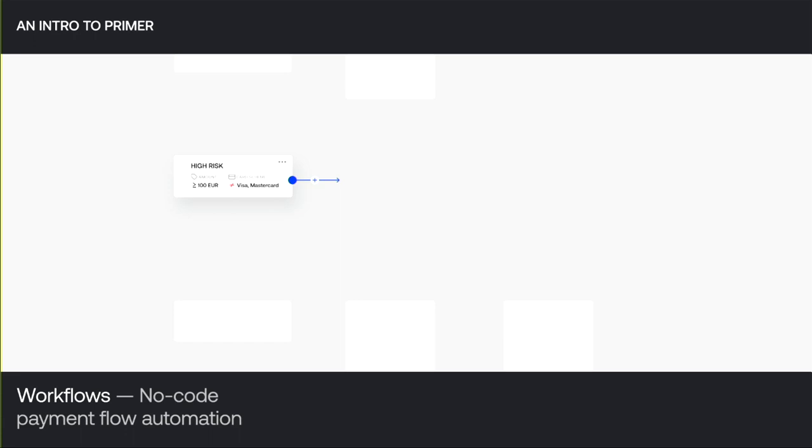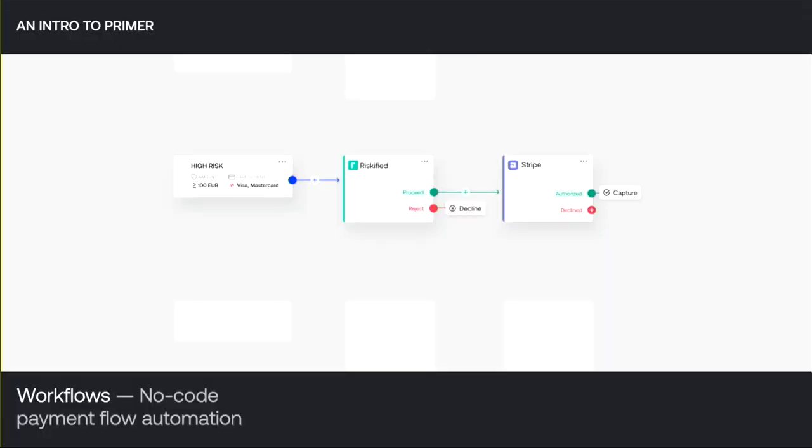Let's say we want to define some logic for our high-risk payments — payments where the amount is more than 100 US dollars and it's paid with a card that is not Visa or Mastercard. You can work with different conditions and define those. So what we want to do first is a fraud check. Let's add in our fraud prevention tool, Riskified. If Riskified says reject, we will decline the transaction. If Riskified says proceed, we'll send the transaction to our PSP, Stripe. If Stripe says authorized, we capture the funds and take the payment. This is a very simple workflow route, but you can imagine the complex things you can do with those simple building blocks. Workflows is a really amazing feature, and it was invented at Primer.